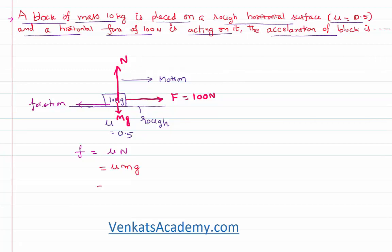So if you substitute the value mu equal to 0.5, m equal to 10 kilogram, you can assume approximately g as 10 meter per second square. So the frictional force is 50 newton. So the applied force is 100 newton and the maximum frictional force is 50 newton. Definitely the applied force is more than the frictional force.